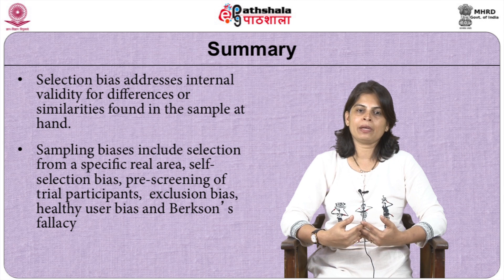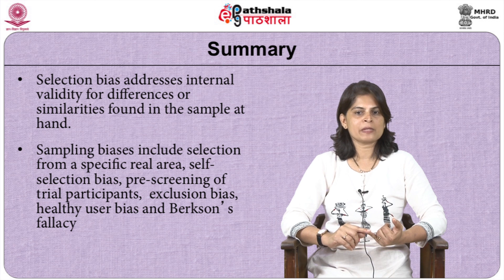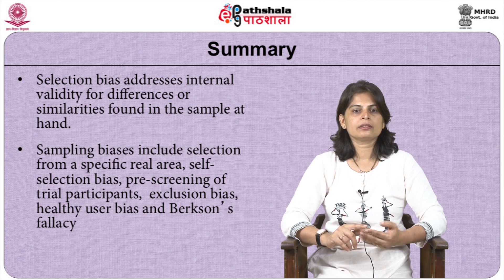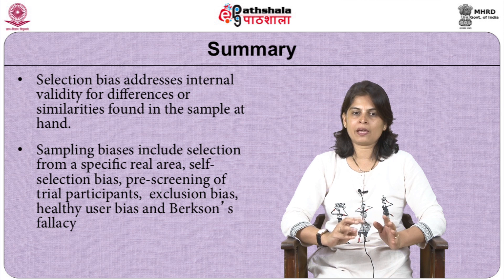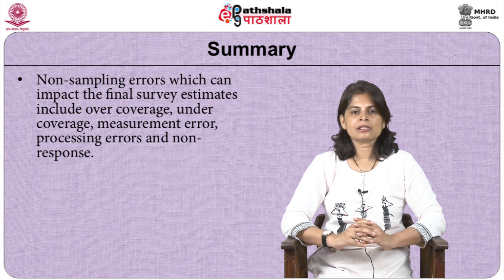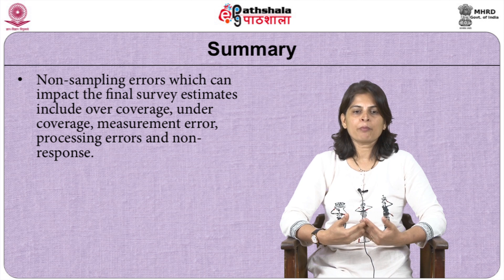Types of sampling bias include: selection from a specific area, self-selection bias, pre-screening of trial participants, exclusion bias, healthy user bias, and Berkson's fallacy. Non-sampling errors which can impact final survey estimates include over coverage, under coverage, measurement error, processing error, and non-response.